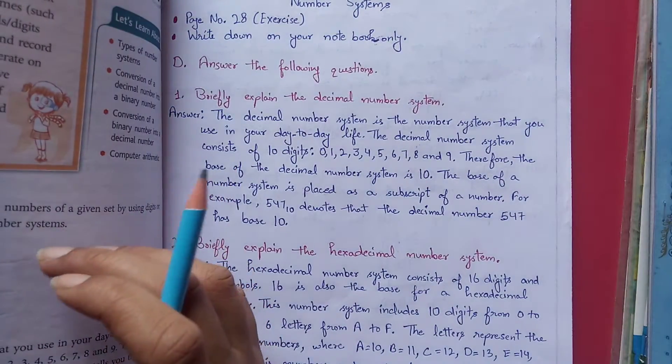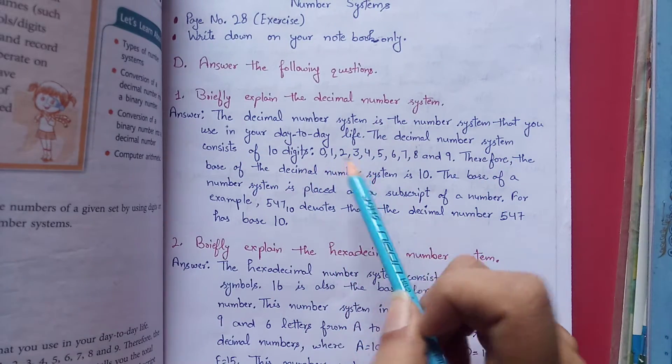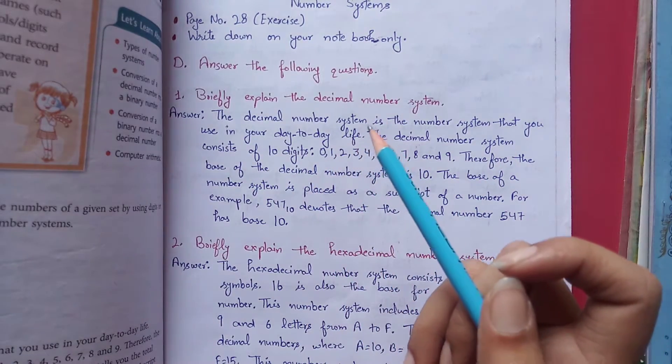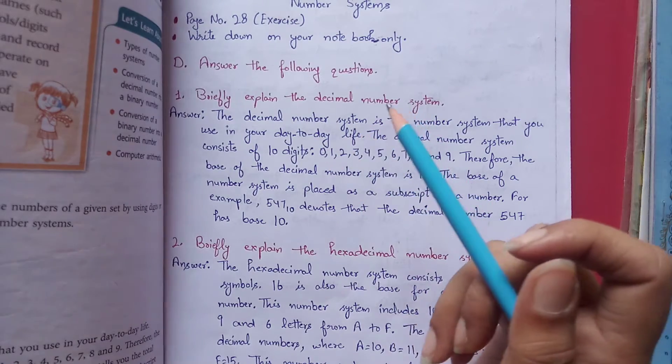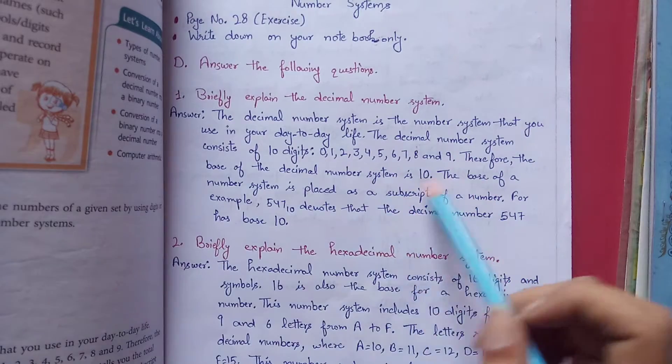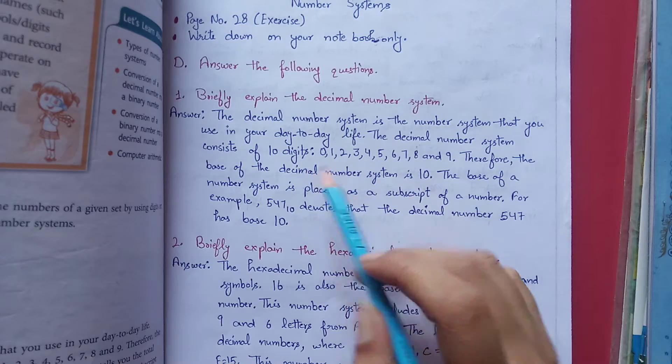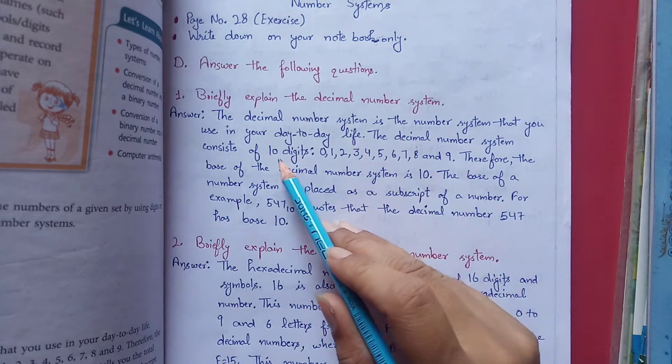Decimal number system kya hota hai? The decimal number system is the number system that you use in day-to-day life. This is the normal number system jo hum normally apni life mein use karte hain, that is 1, 2, 3 and so on. The decimal number system consists of 10 digits, that is 0 to 9. Yeh 10 digits se consist hota hai, isliye iska base bhi kya hota hai? 10.